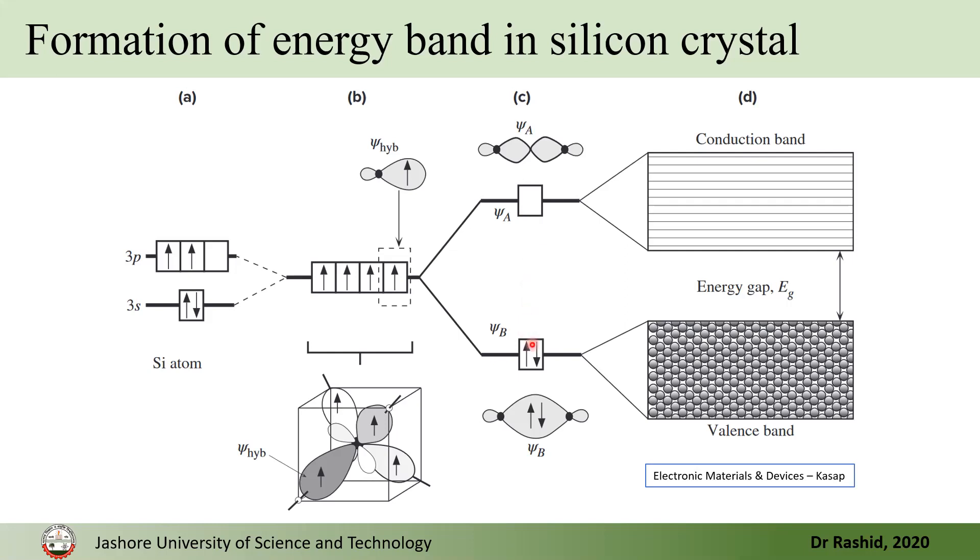And, all the electrons are occupied in the bonding orbitals or the bonding band, which we call the valence band. And, the next band is the conduction band, and there is an energy gap. We also call it band gap.